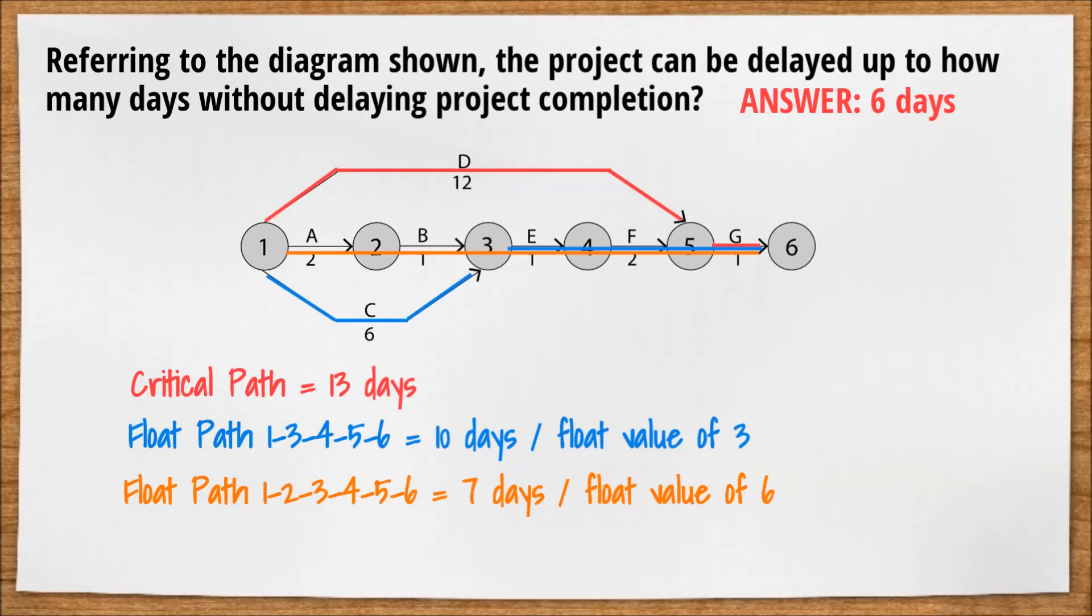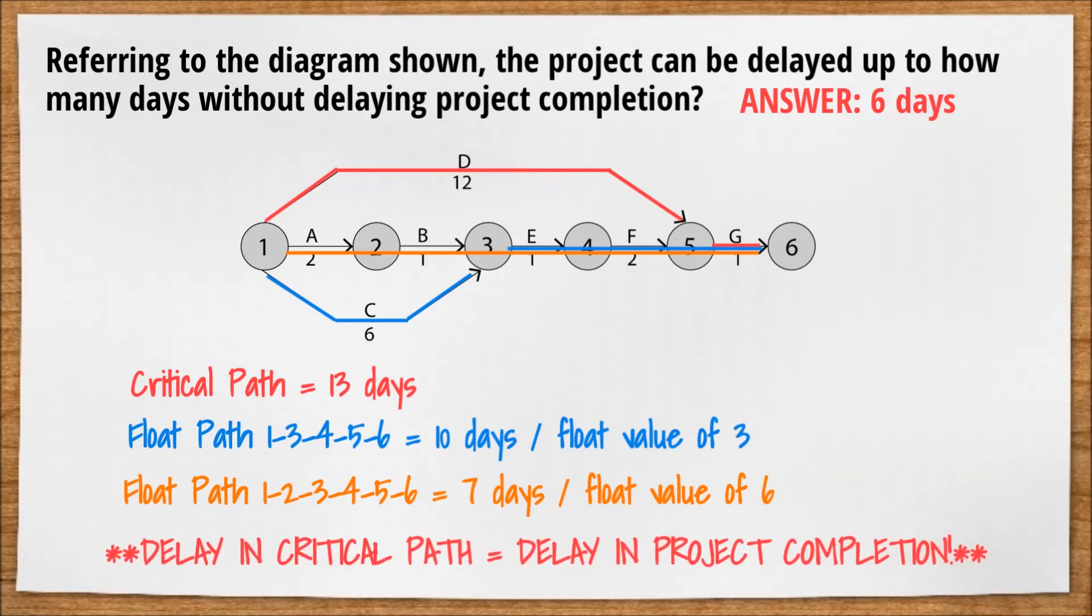But keep in mind that any delay must occur between activities 1 and 5, because 5 and 6 are part of the critical path, and the critical path cannot be delayed. If the critical path gets delayed, the project completion date will be delayed.